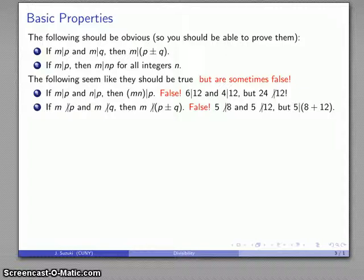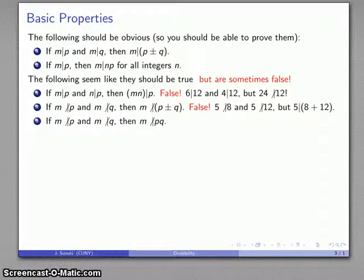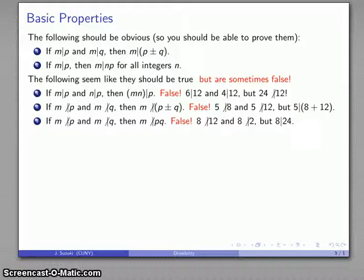And, again, we have something that's similar to the inverse of this second property here. If M divides P, then M divides any multiple. Well, if M does not divide P, and likewise does not divide Q, we might suspect that M does not divide the product P times Q. And, again, this is false. This is not true. We cannot reliably claim this. And as a good example of that, 8 does not divide 12, 8 does not divide 2, but if I take a look at 12 times 2, that's 24, 8 does in fact divide 24.